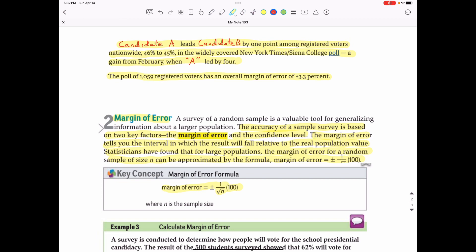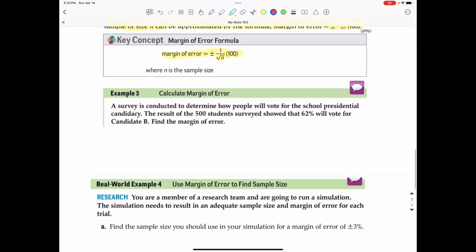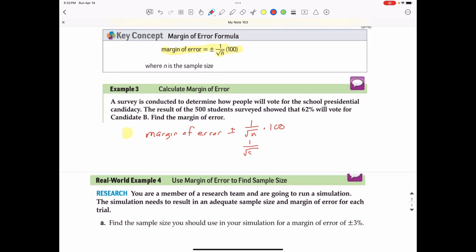Before we go back to our real-life example, we'll go to example 3 down here. A survey is conducted to determine how many people will vote for the school presidential candidate. The result of 500 students surveyed showed that 62% will vote for candidate B. Find the margin of error. So the margin of error is plus or minus 1 over the square root of n, and then you would take that times 100 to change it to a percent.